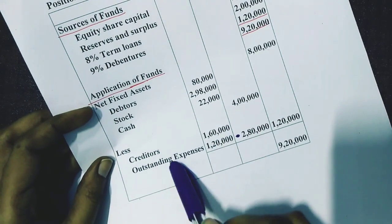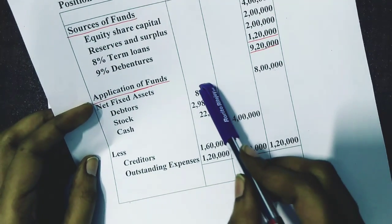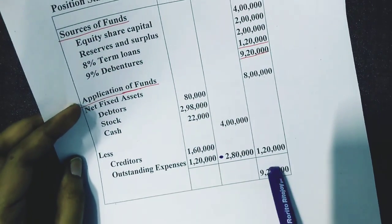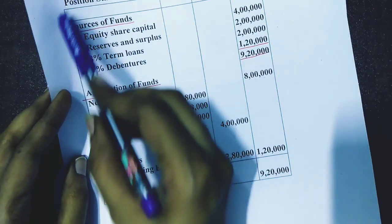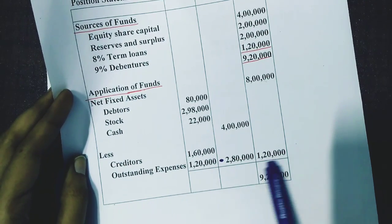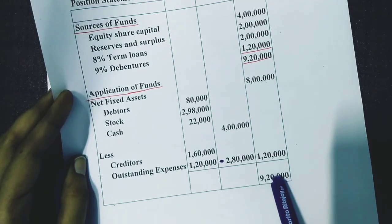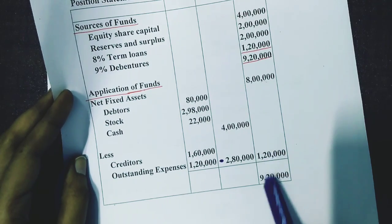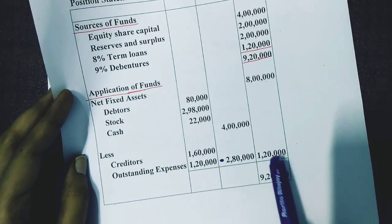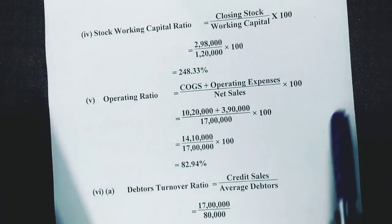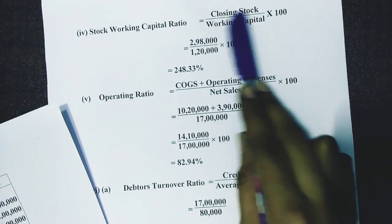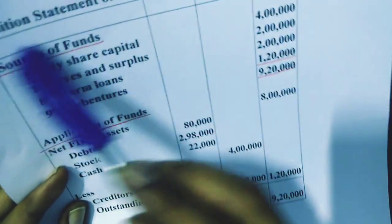A smarter trick for non-commerce students who are not comfortable with the term working capital: check your position statement or balance sheet. Find the last total, then look at the very next amount after that total — that will always be your working capital. Closing stock you will get in current assets, and working capital will be the second-last amount in your position statement.